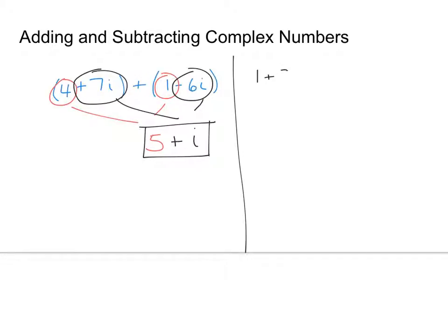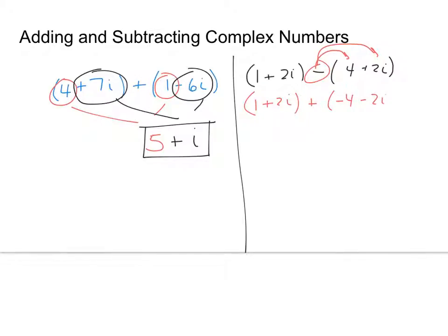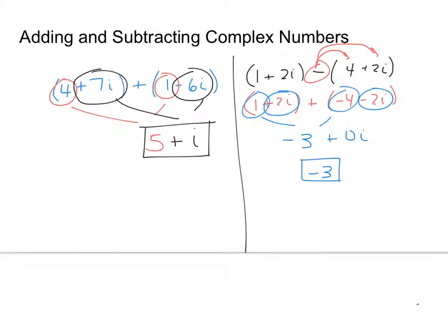Subtracting works much the same way. If I have 1 plus 2i minus another complex number in parentheses, I have to remember that the negative sign gets distributed into both parts. It sometimes helps to rewrite it as an addition problem, adding the opposite of both terms. Adding the real parts gives negative 3, and 2i plus negative 2i gives 0i, so I end up with just a real number: negative 3.